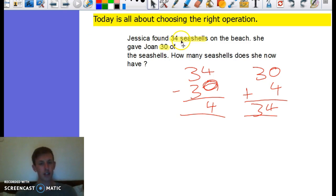Jessica found 34 seashells on the beach. She gave Joan 30 seashells, so she gave them away - they are no longer with Jessica, they have been removed. So we thought that we needed to subtract. We had 34 take away 30, and then to check our answer, we did 30 add 4 to give us our original 34 shells.